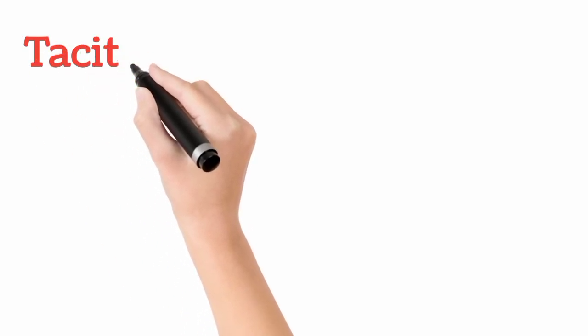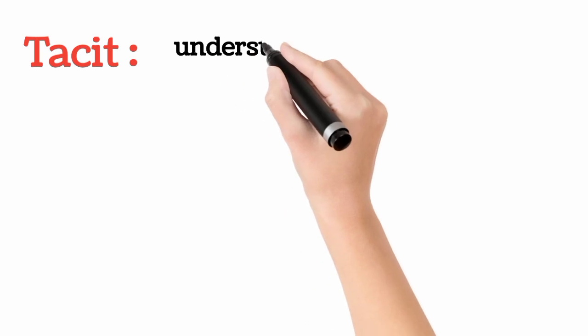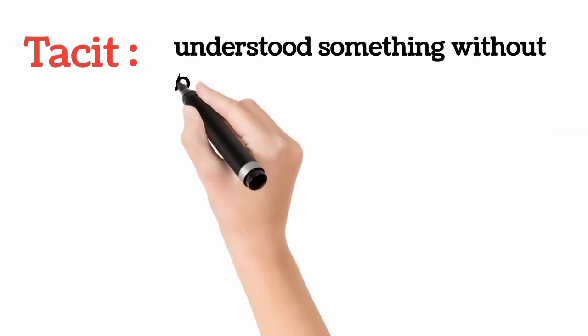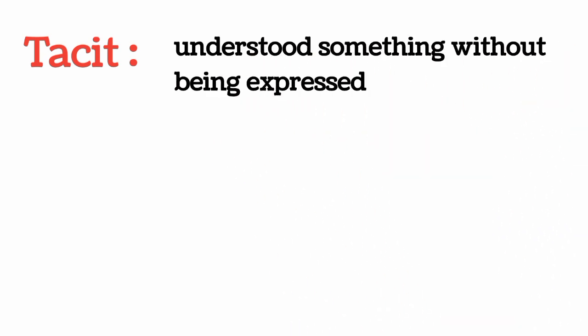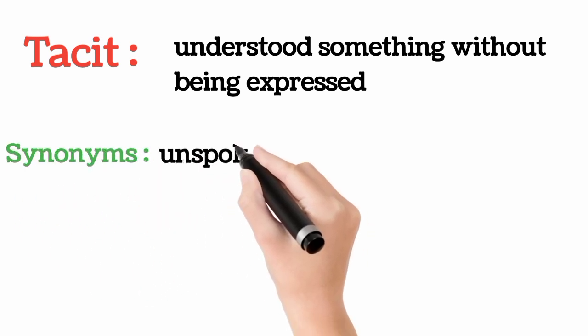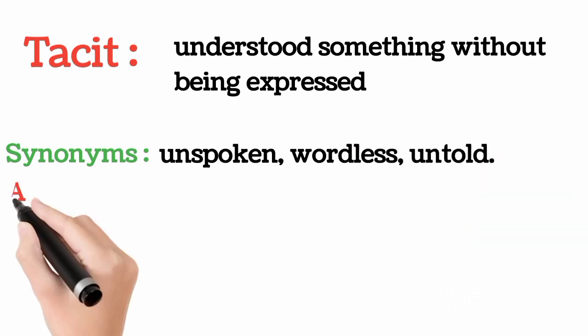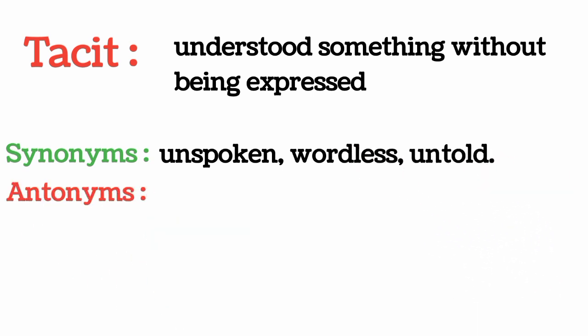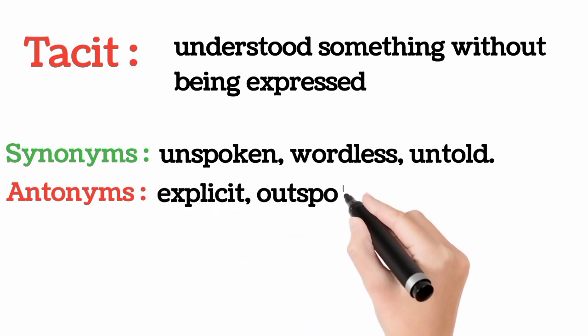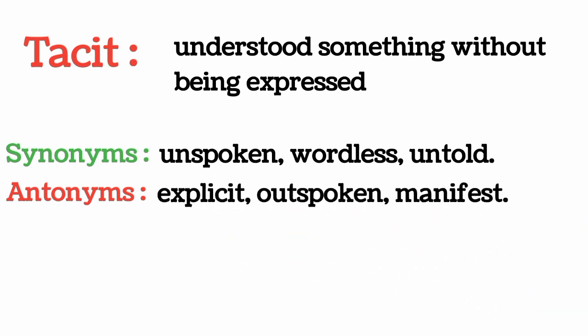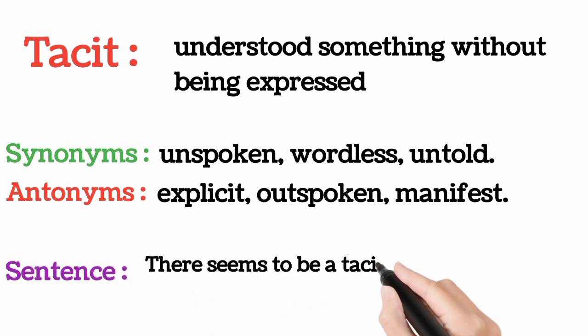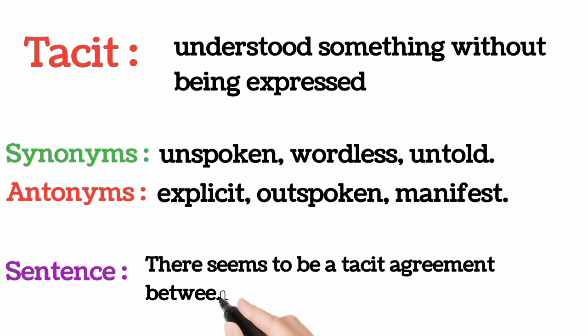Tacit, it's an adjective, which means understood something without being expressed. Synonyms: unspoken, wordless, untold. Antonyms: explicit, outspoken, manifest. There seems to be a tacit agreement between China and Pakistan.